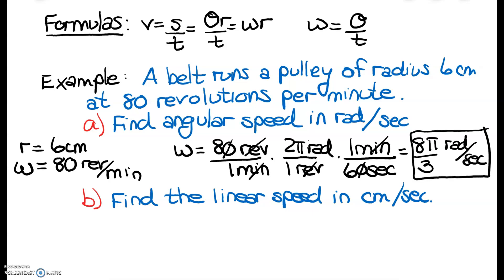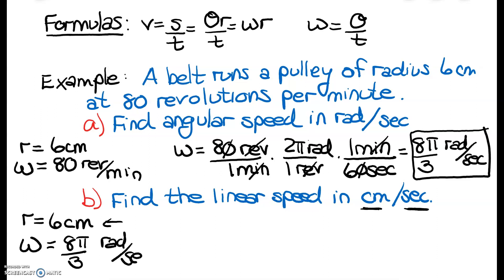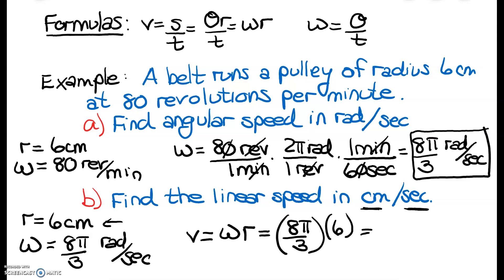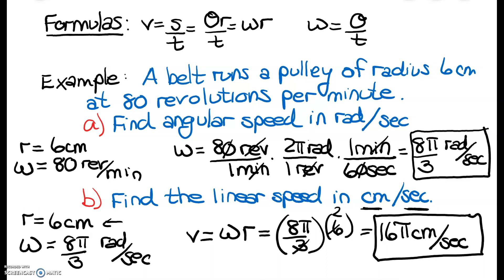Now they're asking us to find the linear speed in centimeters per second. I know that I have a radius of 6 centimeters, and I just calculated my angular speed as 8π/3 radians per second. I have a formula for linear speed in terms of ω and r, so I'm just going to plug in my angular speed and my radius. When I reduce and multiply, I get 16π centimeters per second — no dimensional analysis needed.